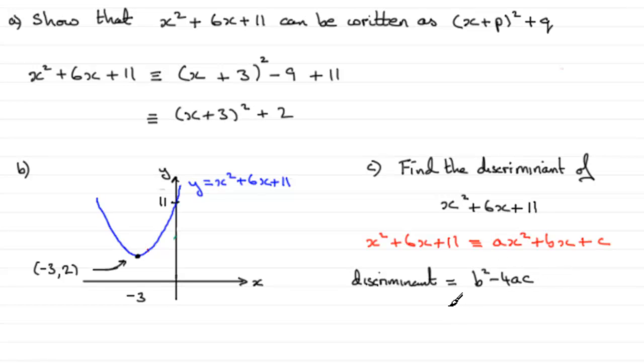And if we were to work this out, you can see that the b value is the 6, so we've got 6 squared minus 4 times a. a is a 1 here. We've got 1x squared, so 4 times 1 times c, which is the 11. And if you work this out, you've got 36 minus 44, which comes to minus 8.